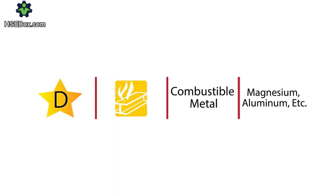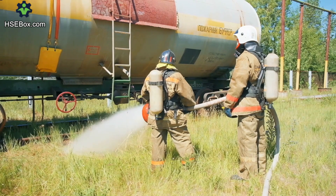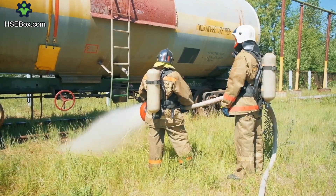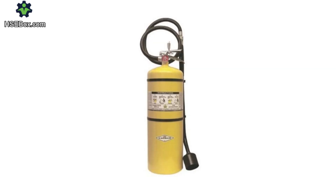Another less common but equally dangerous category is class D fires, which involve flammable metals like magnesium, titanium, or aluminum. These fires occur primarily in industrial settings and are particularly challenging to handle. Water and even foam are ineffective here, so dry powder extinguishers specifically designed for metal fires are used.